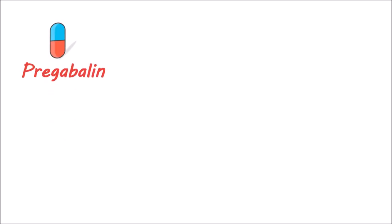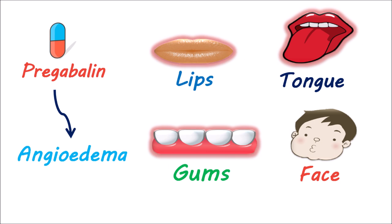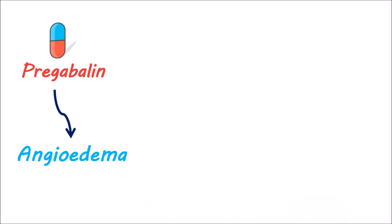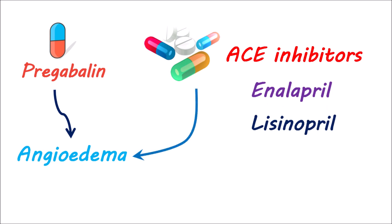Now let's focus on the precautions of pregabalin. One important precaution is that it can cause angioedema, resulting in swelling of the lips, tongue, and gums, and some facial swelling. This angioedema can also cause swelling in the throat and larynx, causing difficulty breathing and respiratory compromise. The angioedema produced by pregabalin is further increased with a few drugs such as ACE inhibitors — angiotensin-converting enzyme inhibitors — like enalapril and lisinopril, which may increase the risk of angioedema. Hence, when they are given along with pregabalin, they can further increase the risk of angioedema, and pregabalin should be carefully used with such drugs.